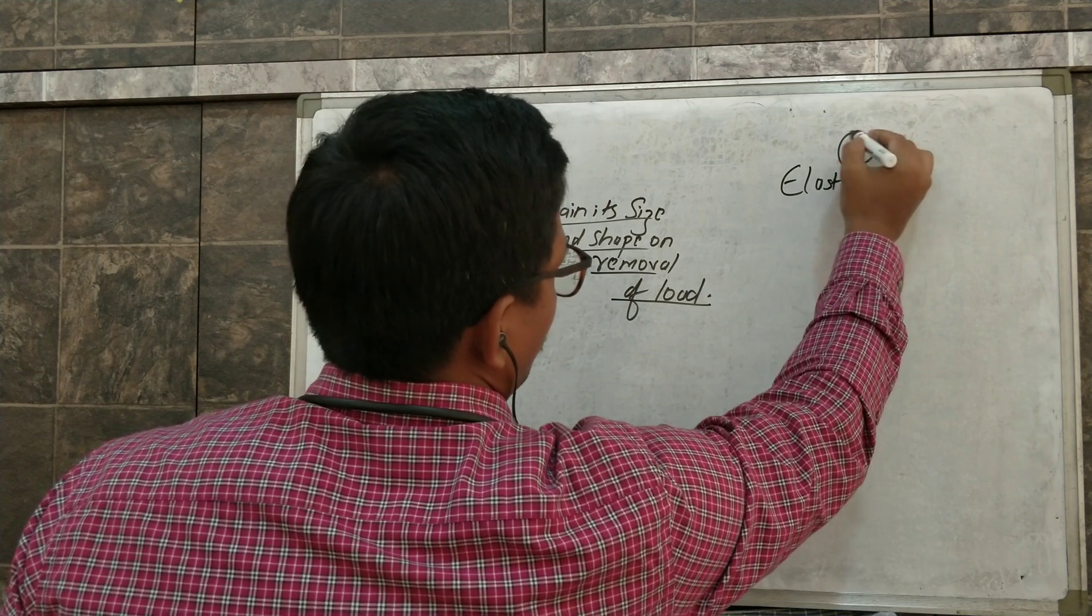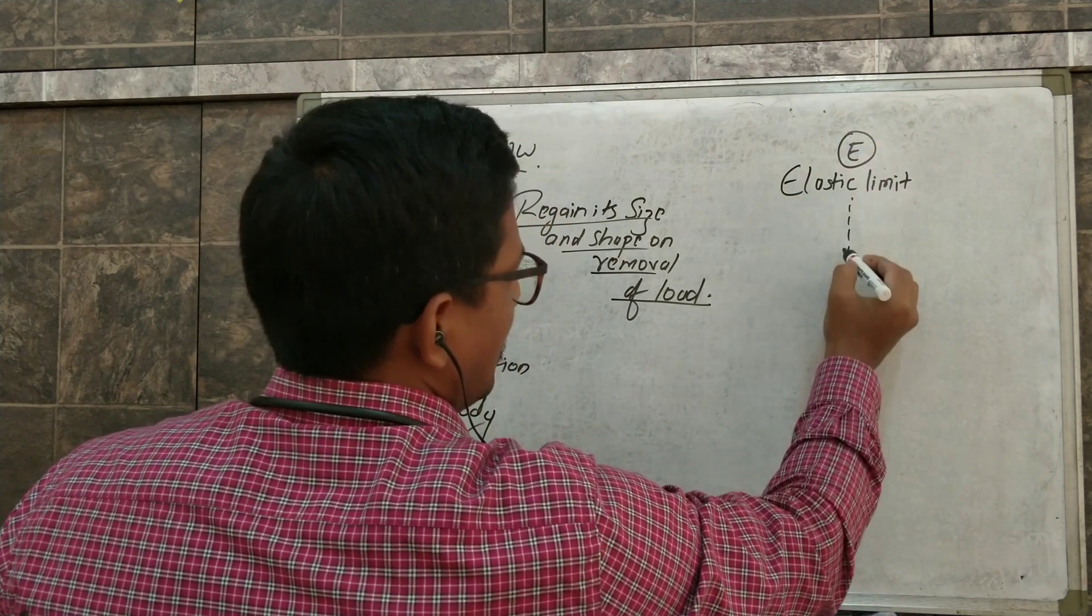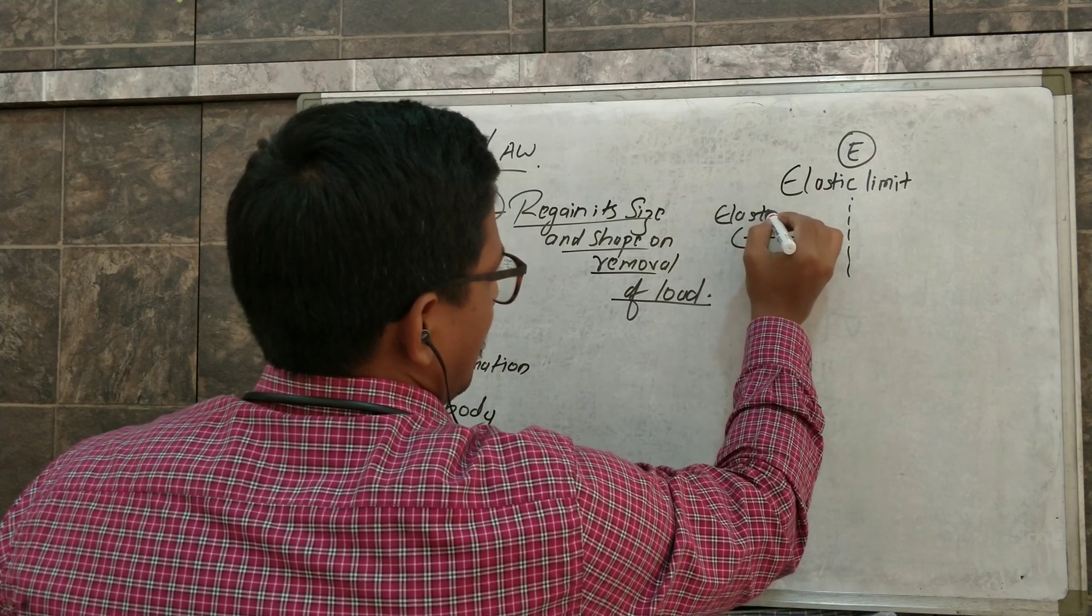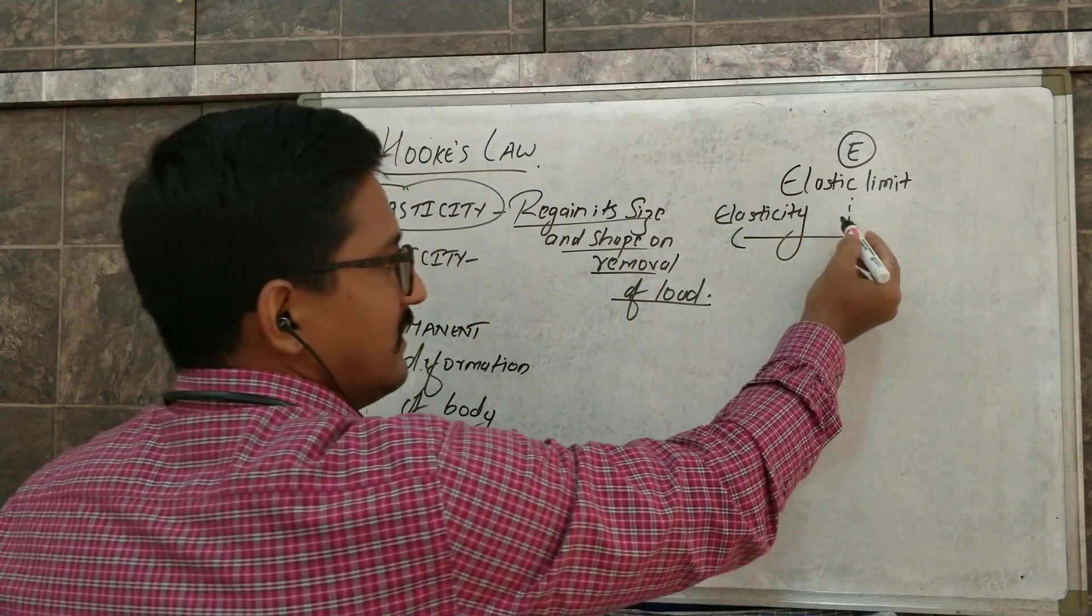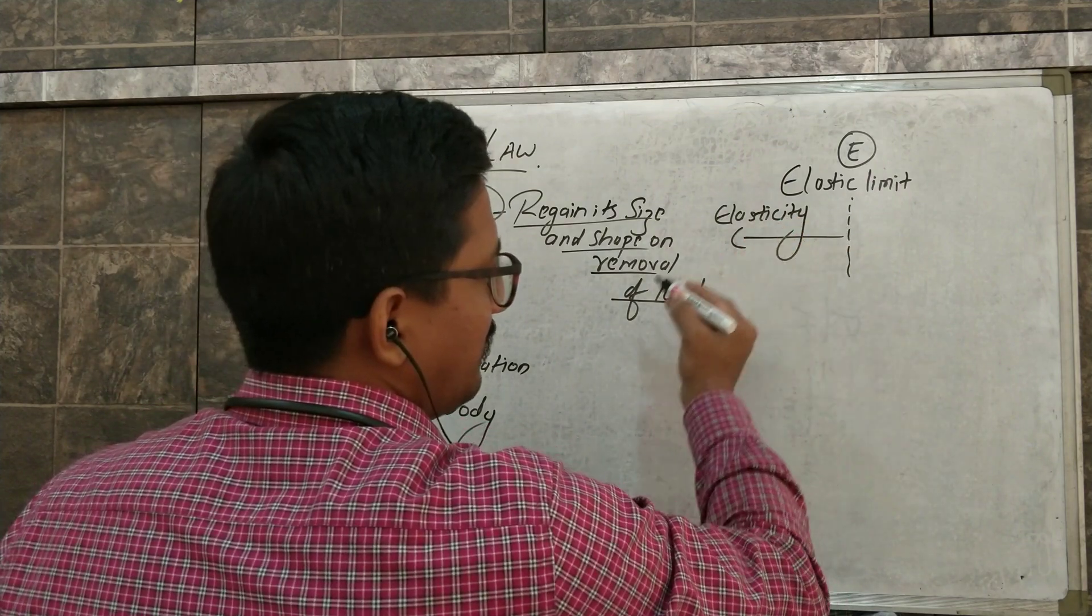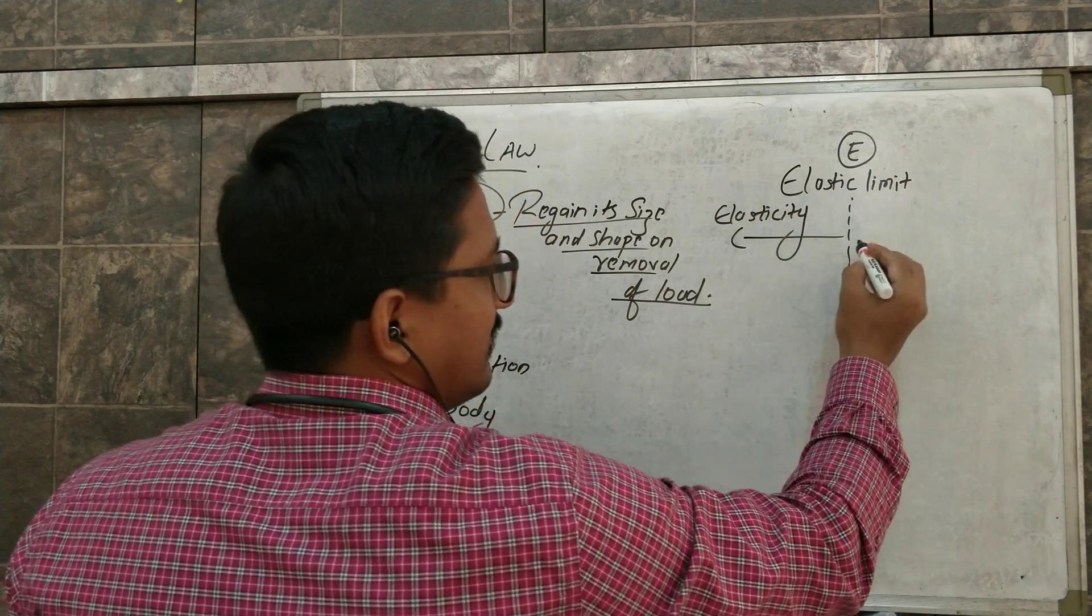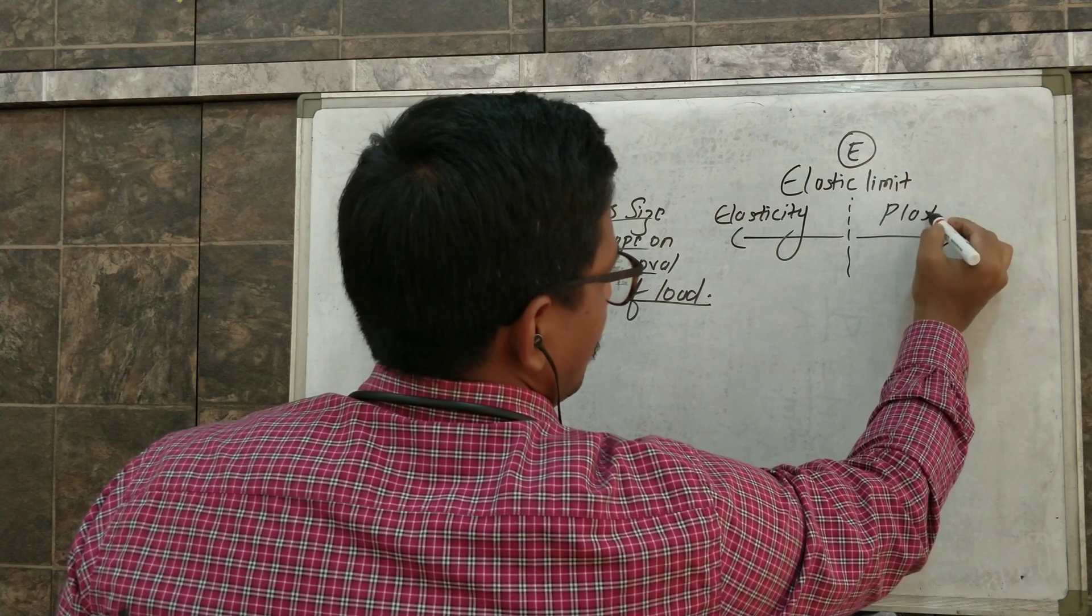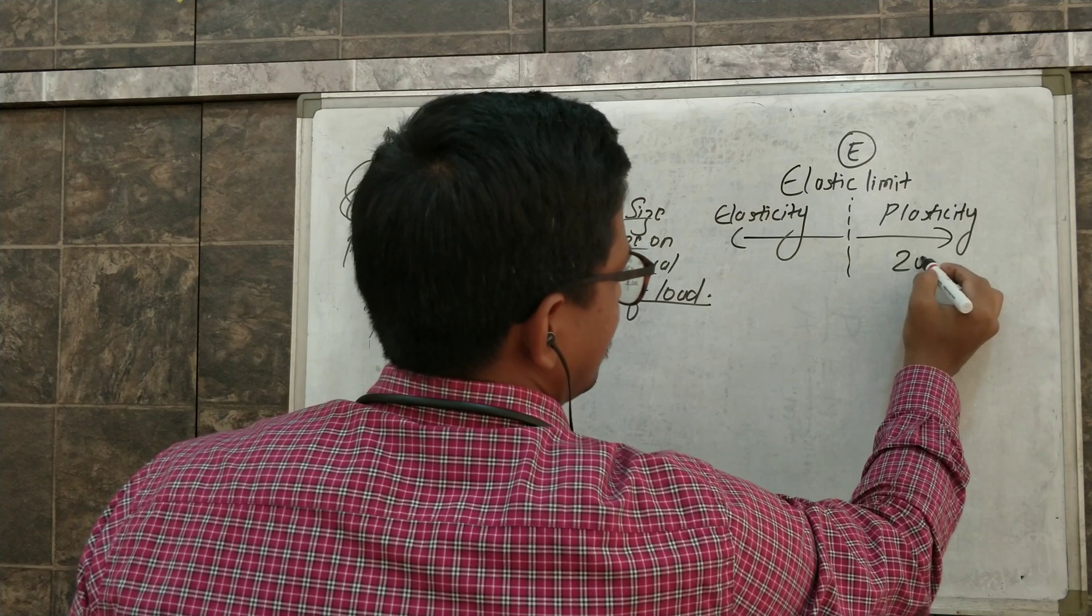Which is denoted by E. So a material will have elasticity or elastic property on this side of the elastic limit and when we cross the elastic limit the material will go into plasticity zone.